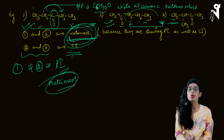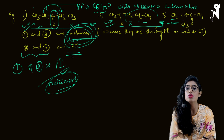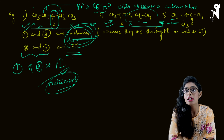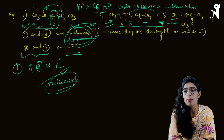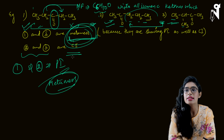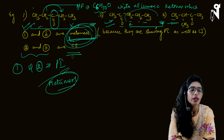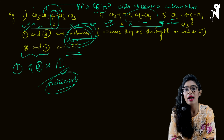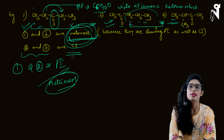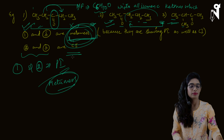We are done with structural isomerism — we've covered chain isomerism, positional isomerism, functional isomerism, ring-chain isomerism, and metamerism. Tautomerism is still remaining. In the next class we'll deal with stereoisomerism: geometrical isomerism first, then optical isomerism — a very lengthy and important topic. The easier part is done; a good conceptual part starts from the next class.